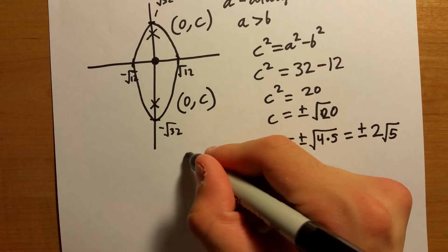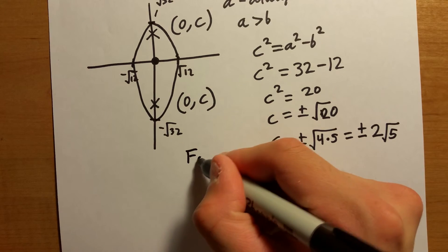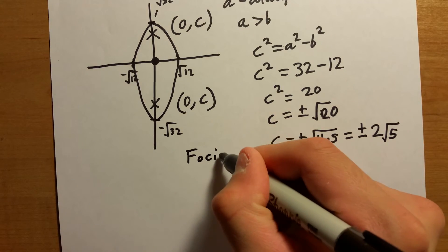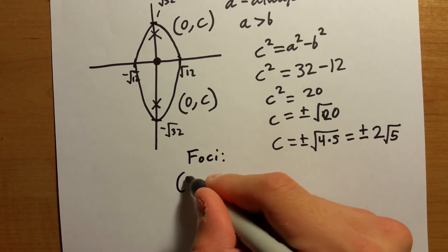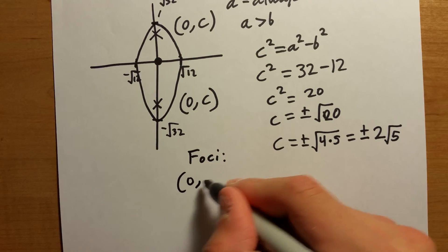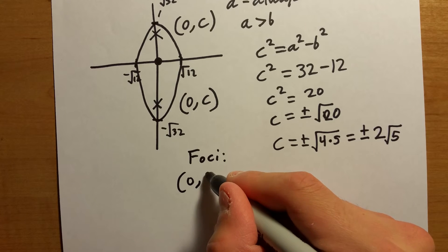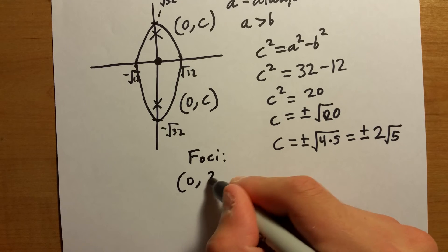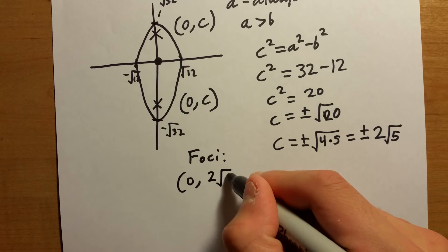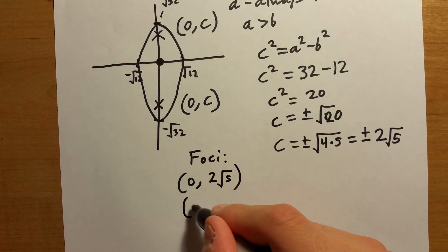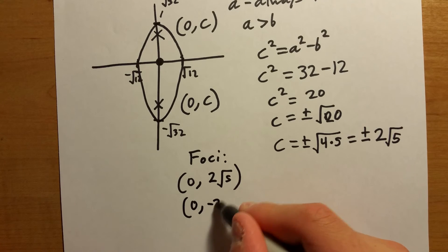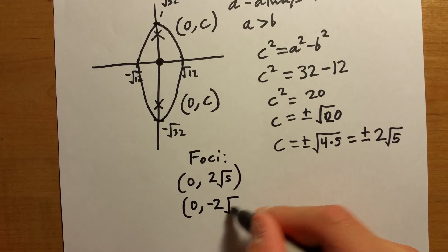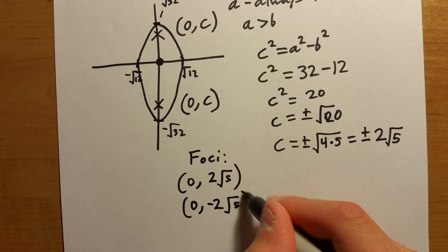So our foci are going to be at (0, 2√5) and (0, −2√5).